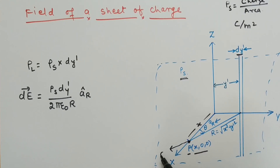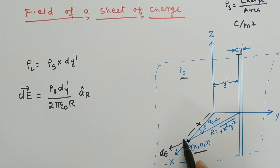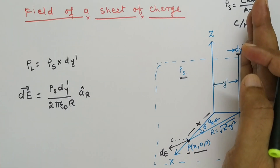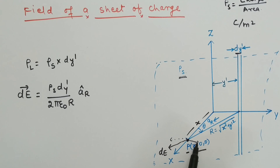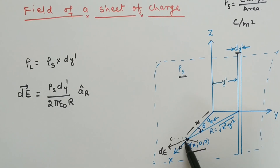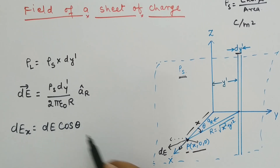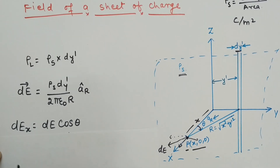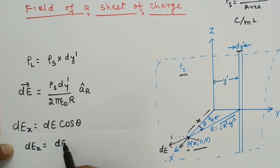The dE vector will have two components: one in the X direction and one in the Y direction. The Y direction component from a strip at positive y' will be cancelled by the opposite Y direction component from a corresponding strip at negative y'. So only the X direction electric field remains. Defining the angle as θ, we have dEx = dE · cosθ.